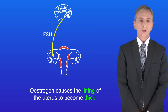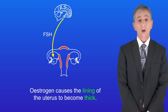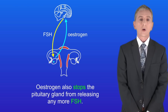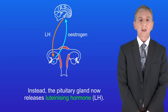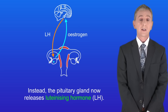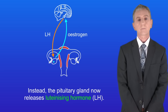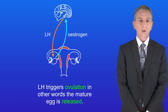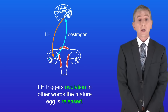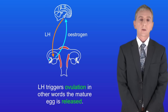Estrogen causes the lining of the uterus to become thick. Estrogen also stops the pituitary gland from releasing any more FSH. Instead the pituitary gland now releases luteinizing hormone or LH. LH triggers ovulation — in other words the mature egg is released.